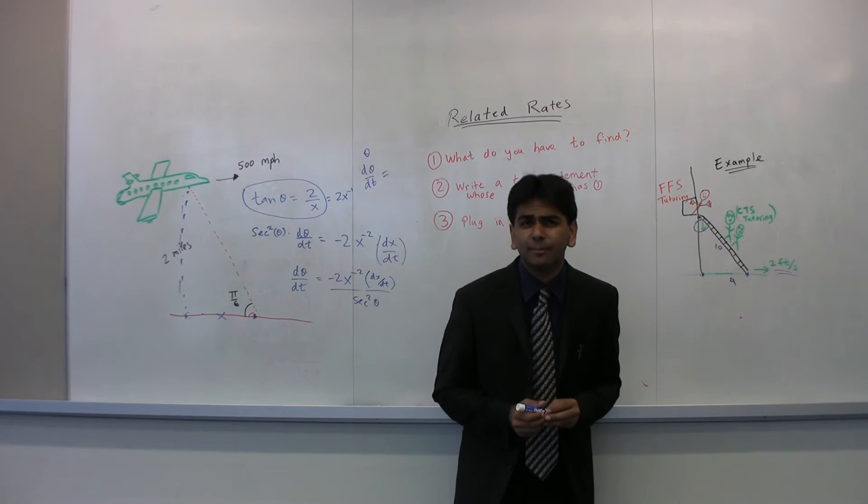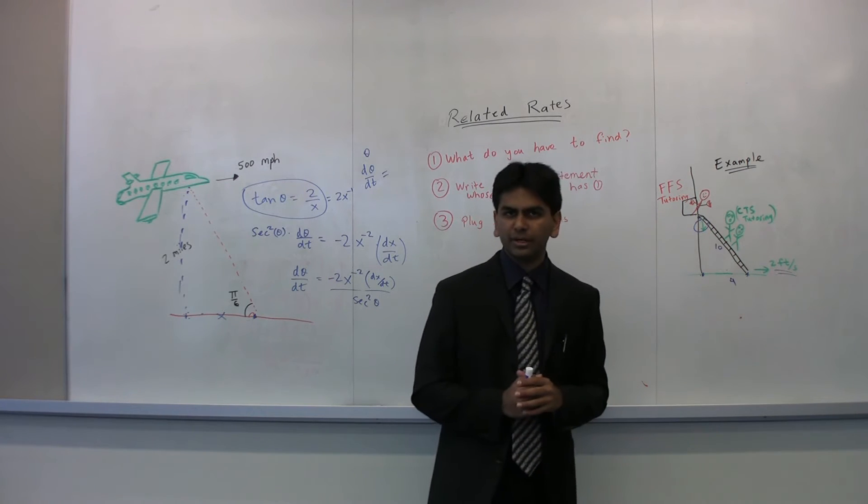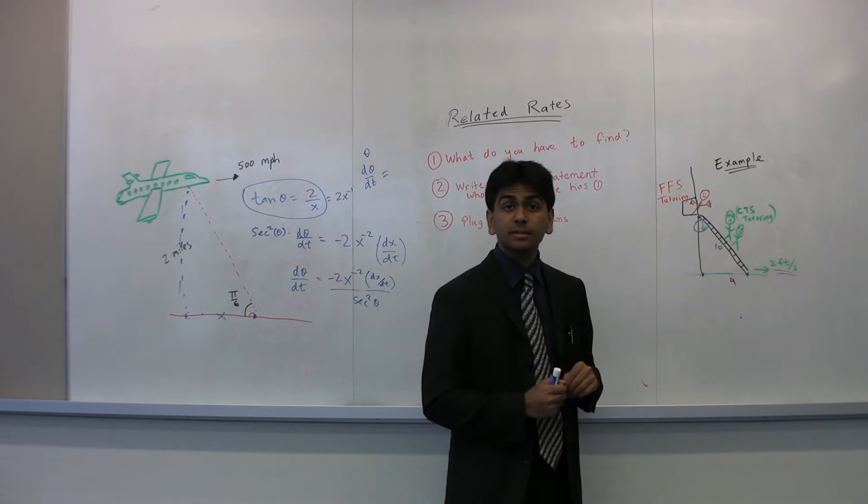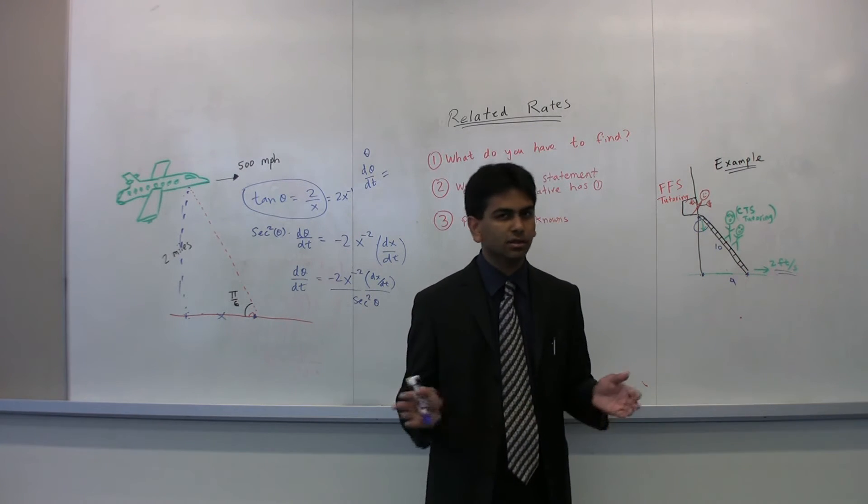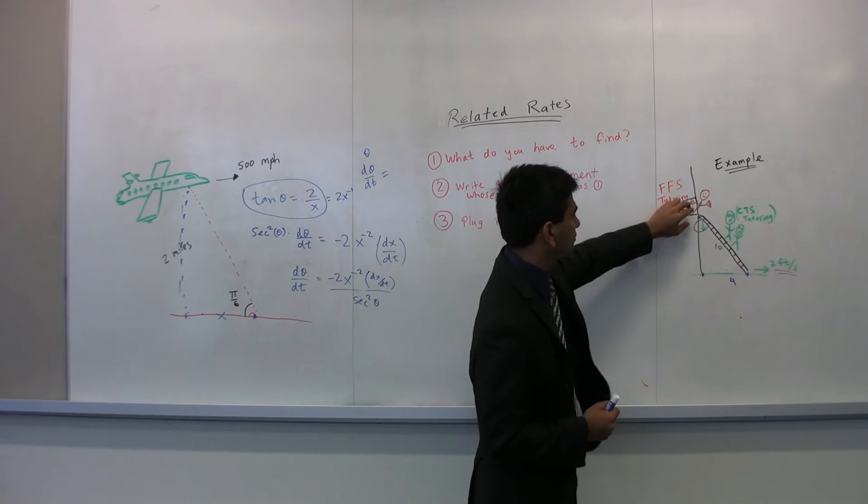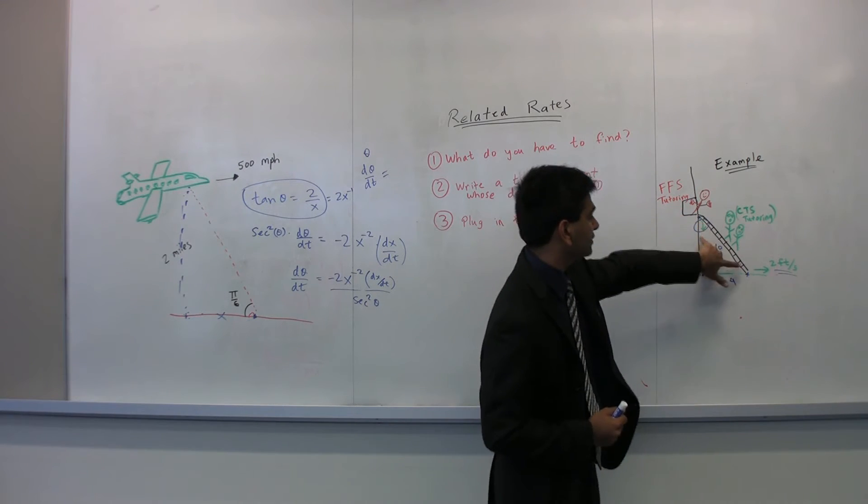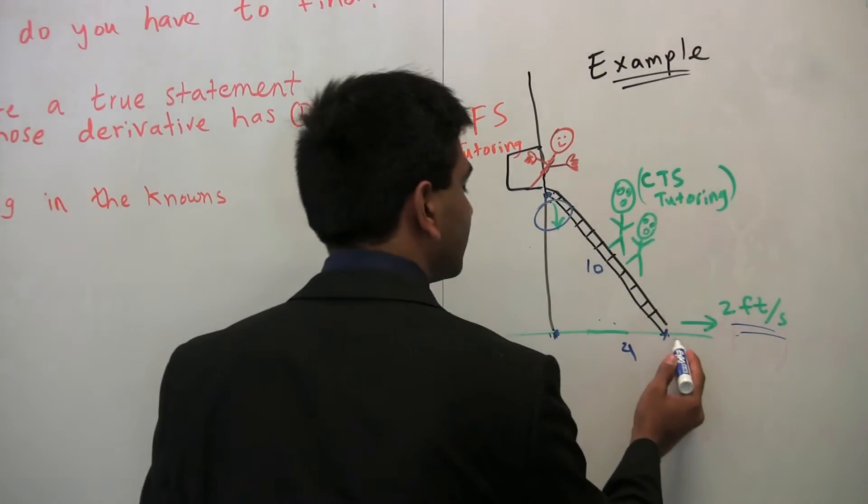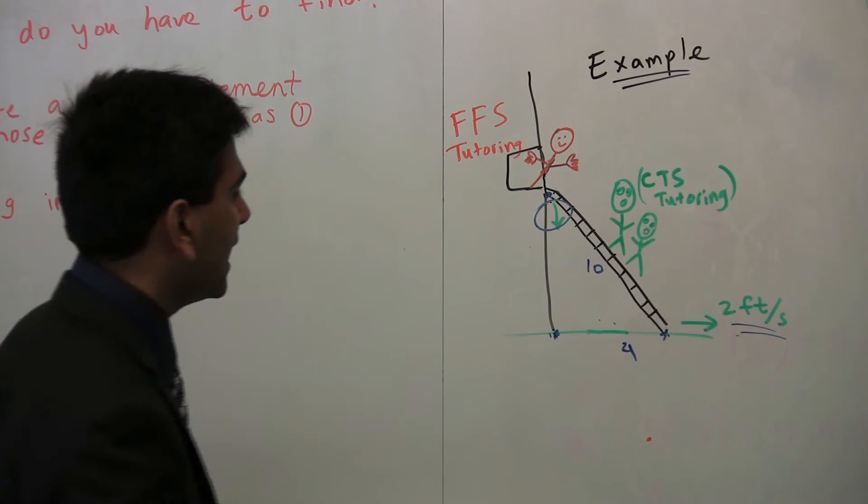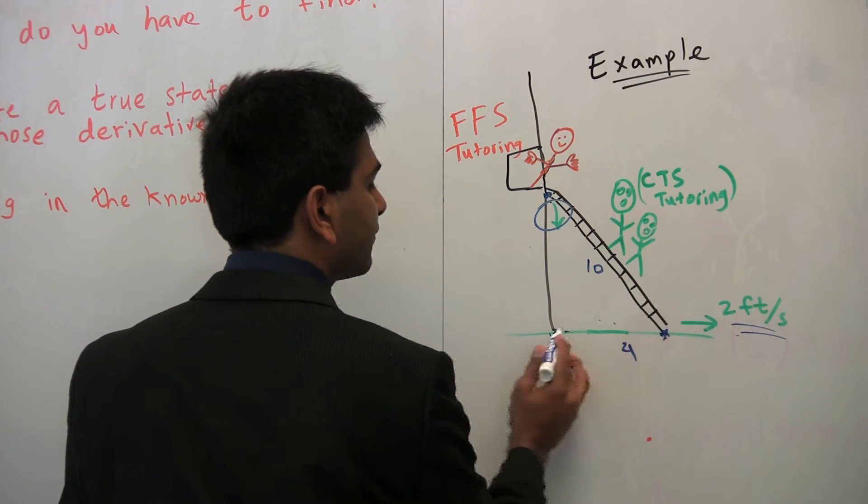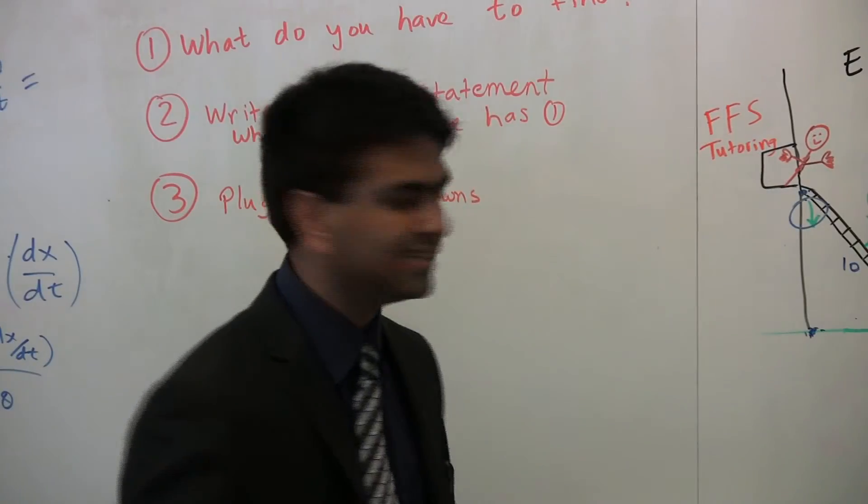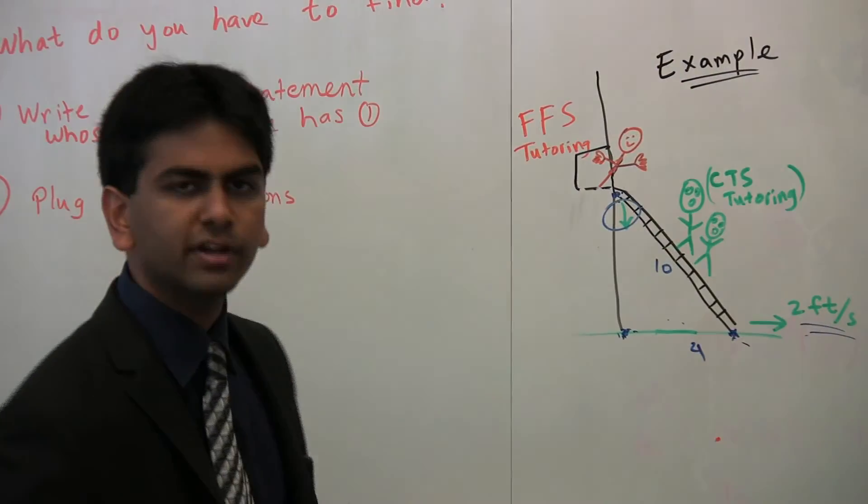Now, let's look at another example. You are over here in the FFS tutoring building, and all of a sudden, you notice that there is a ladder, and the people from CTS tutoring, close to standard tutoring, our competitors, they're over here, they're trying to attack our building. So, you push the ladder down, and now they're falling, right? And so, you notice, somehow, that the ladder over here is going out in this direction at 2 feet per second, and it happens to be 4 feet from this building right now, from the tip of the building, and the ladder is 10 feet tall. So, now you ask yourself, how fast is the ladder falling vertically? What's its vertical speed?